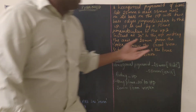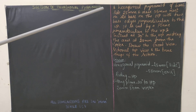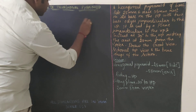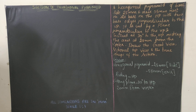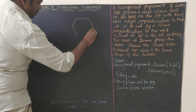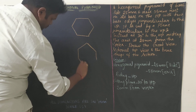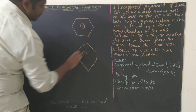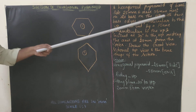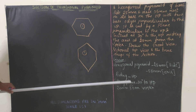Let us start explaining the question. The solid given is a hexagonal pyramid. A hexagon can be drawn in two different ways. The base is 25mm, so all sides will be 25mm, and the axis length is 55mm. The pyramid rests on its base on HP, so the base diagram will be drawn in HP.